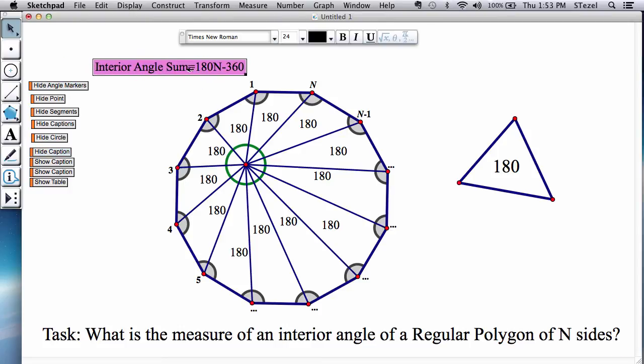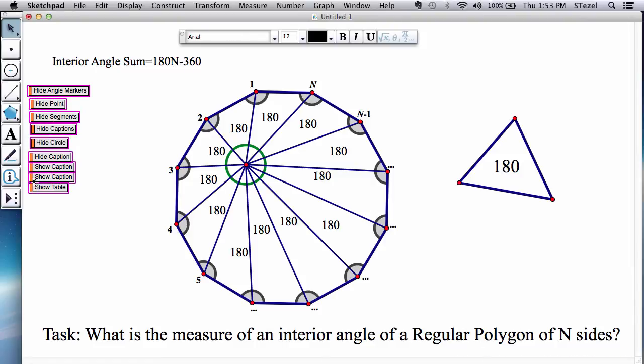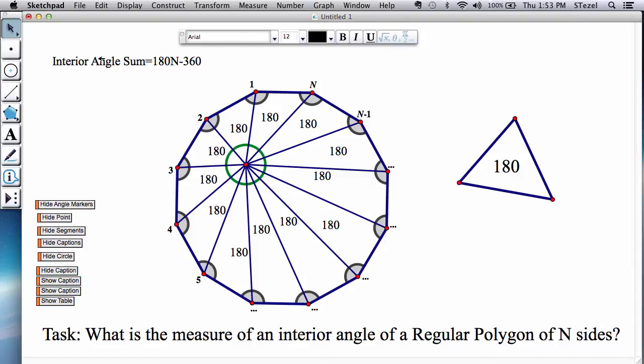You realize that the interior angle sum is found by multiplying 180 by n because you have n triangles, each of them have 180 degrees in total, and you remove from that grand total 360 which is the middle.